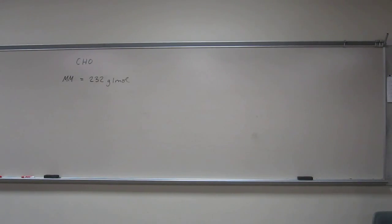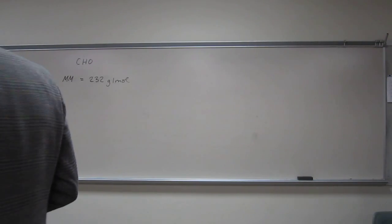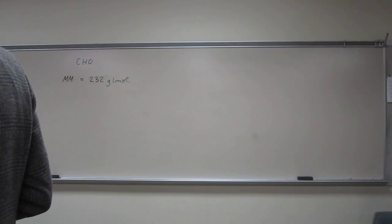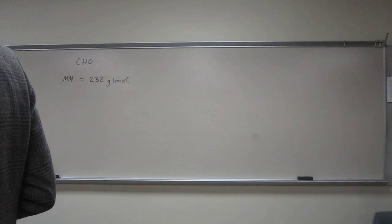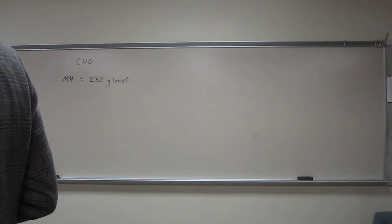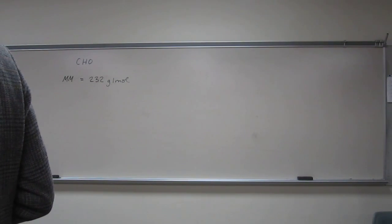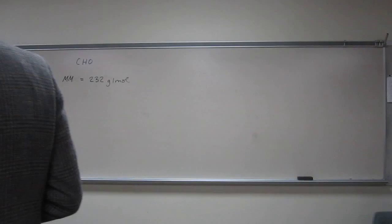Okay, so this is one of those empirical formula problems. It gives you the empirical formula. It says an organic compound which has the empirical formula CHO has a molar mass of 232 grams per mole. The molecular formula of the compound is what?